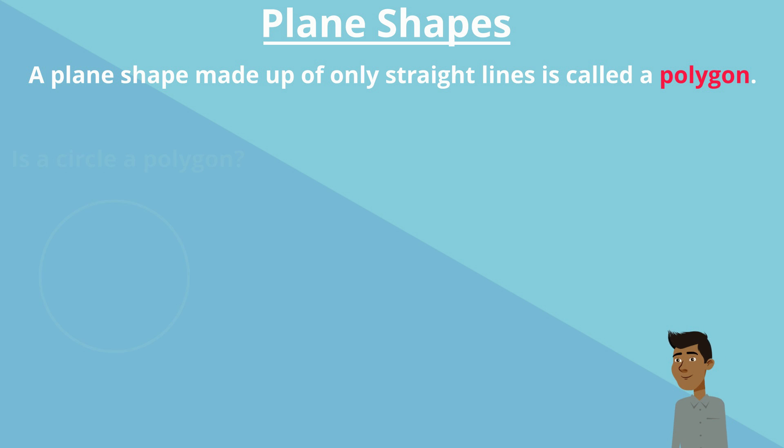Is a circle a polygon? Well, a circle is a plane shape. However, it is not a polygon as it is not made up of straight lines.